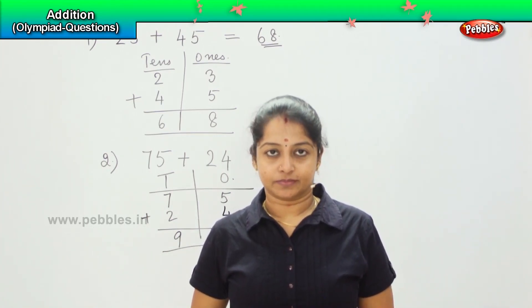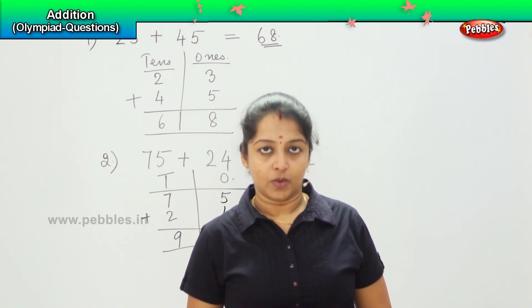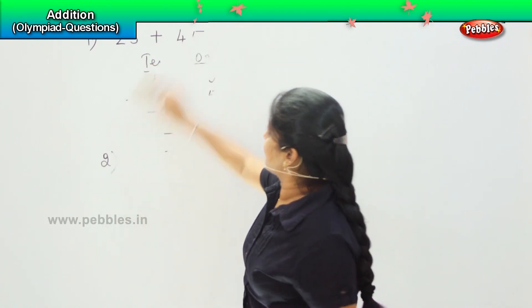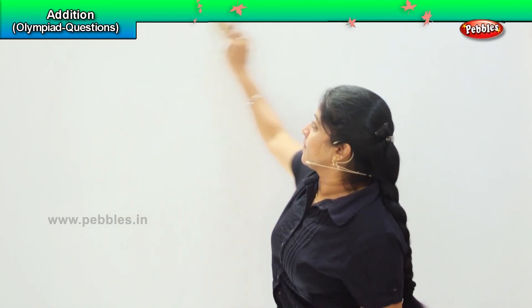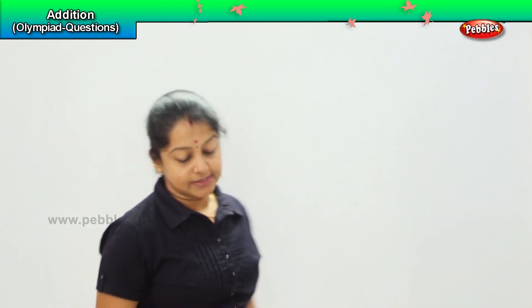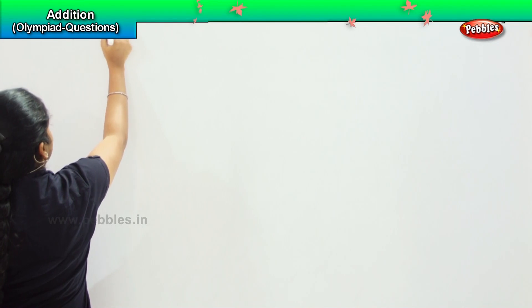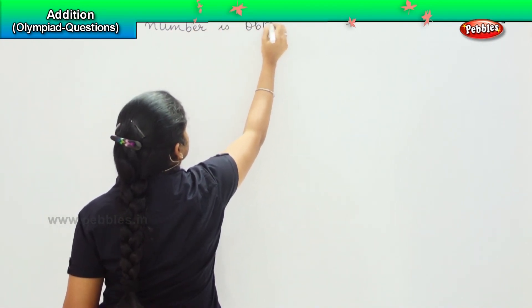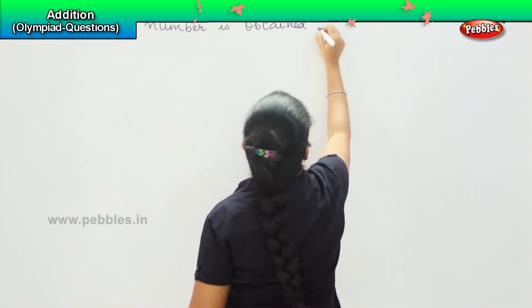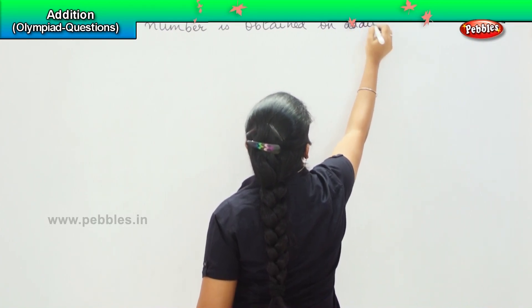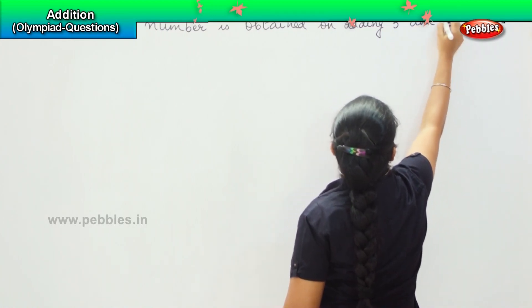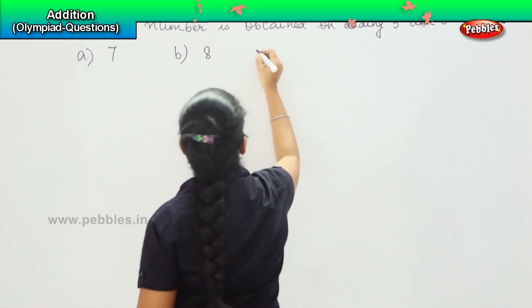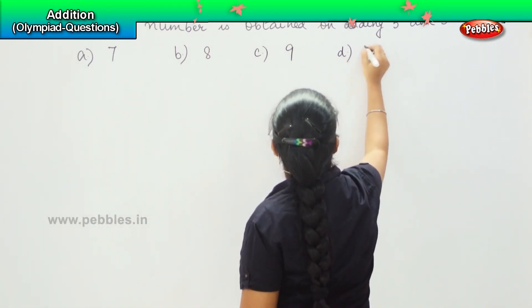So, are you clear with this form of addition? Shall we move further with the next questions? Here comes another set of questions. The next question is: what number is obtained on adding 5 and 3? The options are A: 7, B: 8, C: 9, and D: 10.